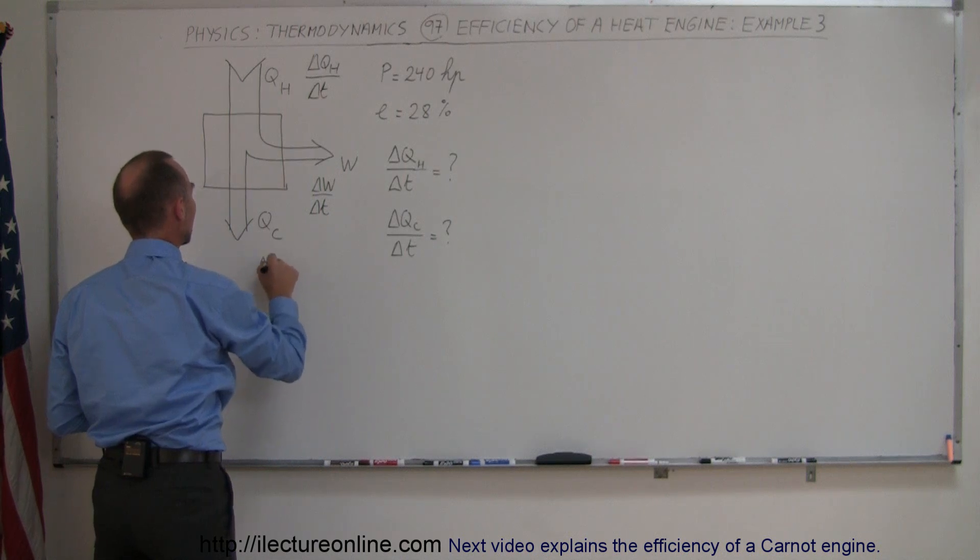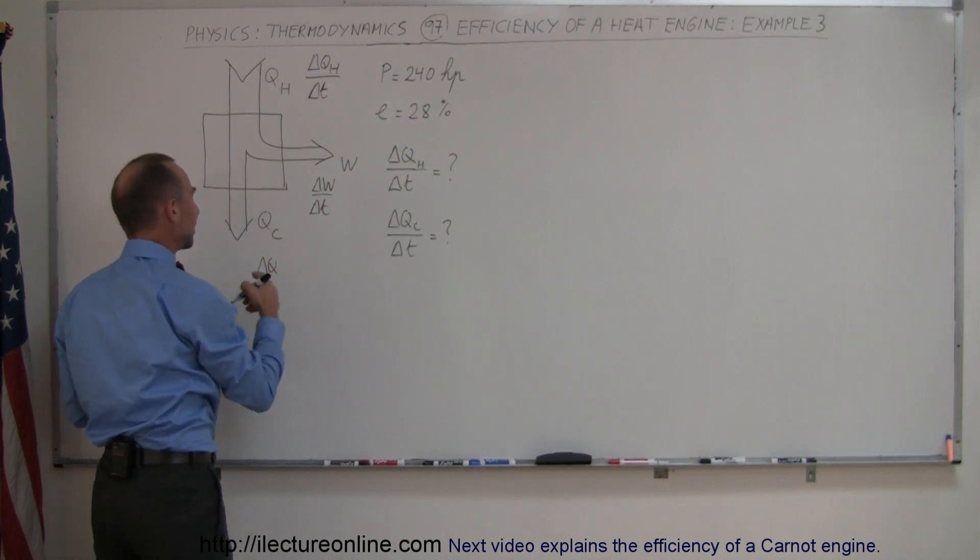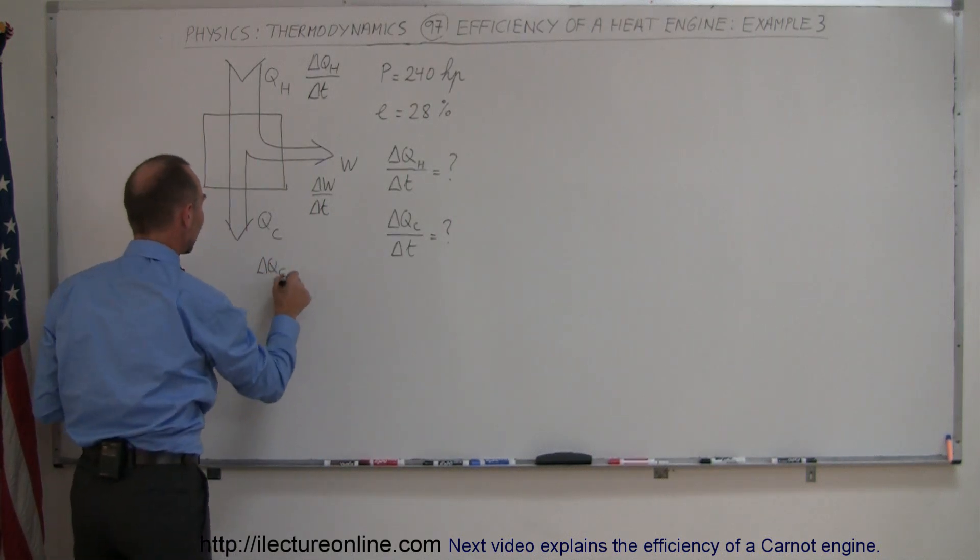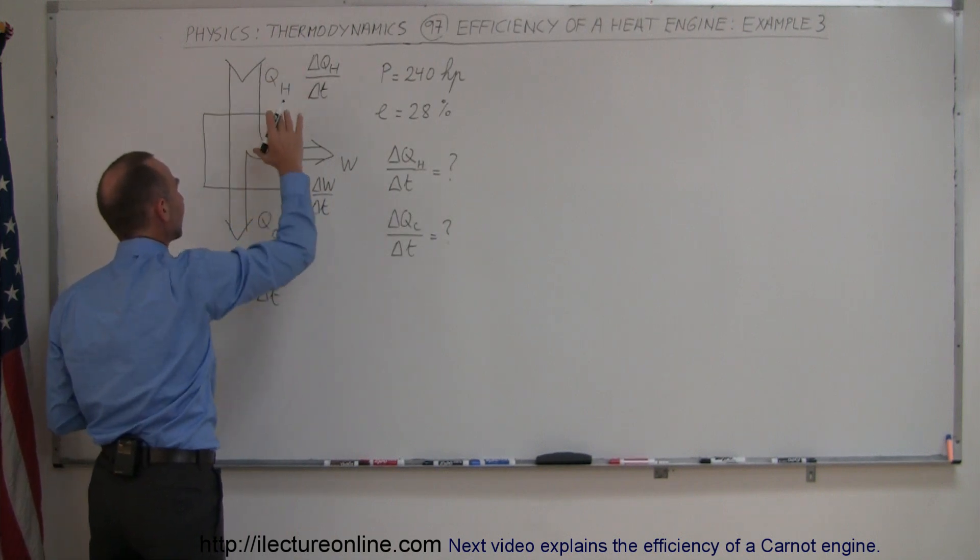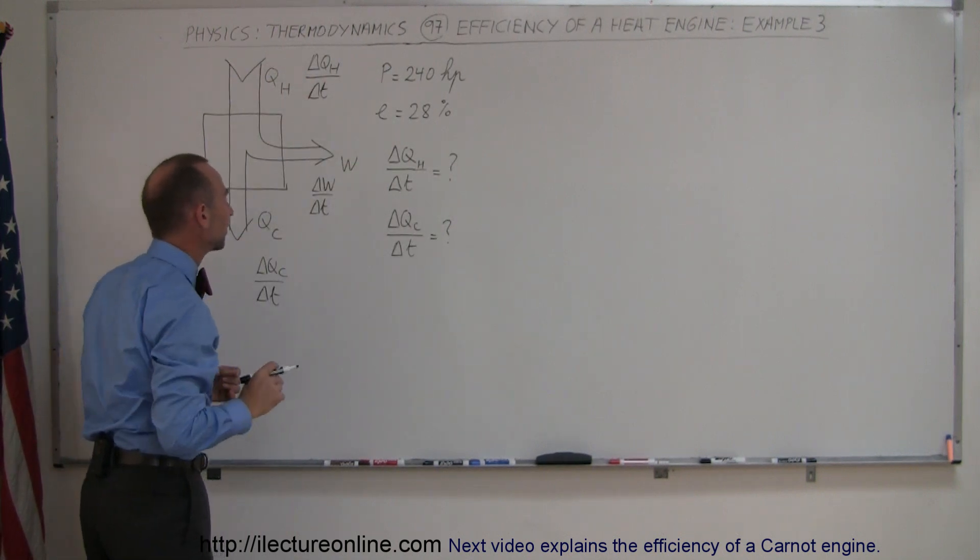and you divide this by time and say the rate at which energy or heat is dumped into the cold reservoir per unit time. So all I did was simply divide each of these three quantities by time.